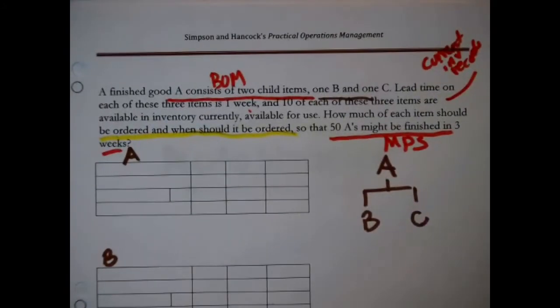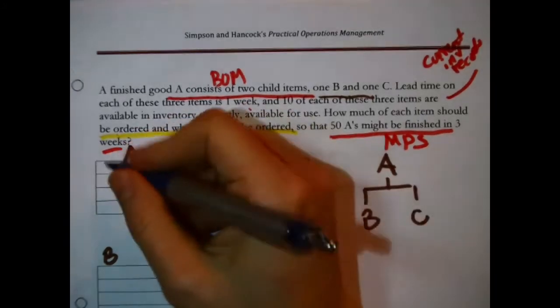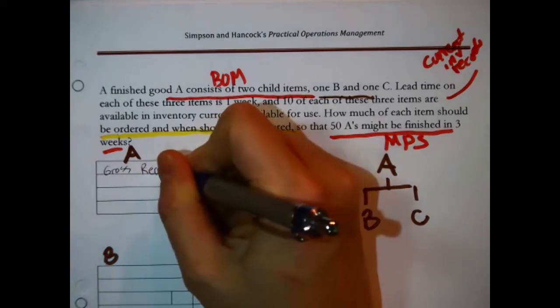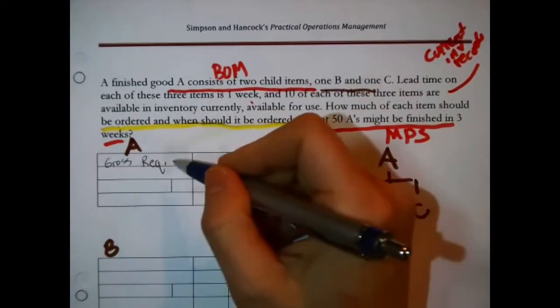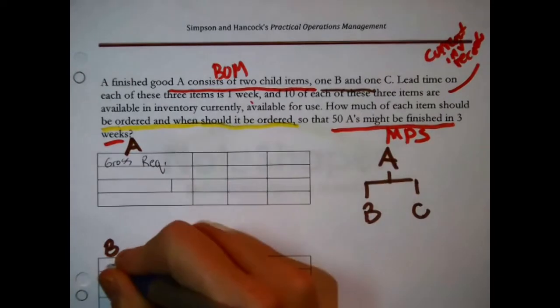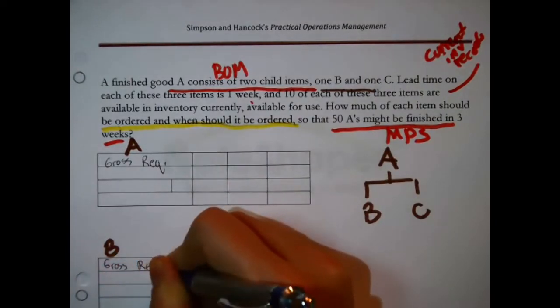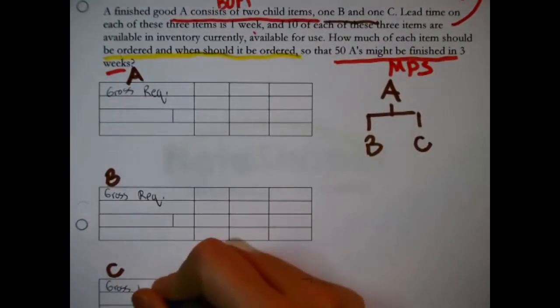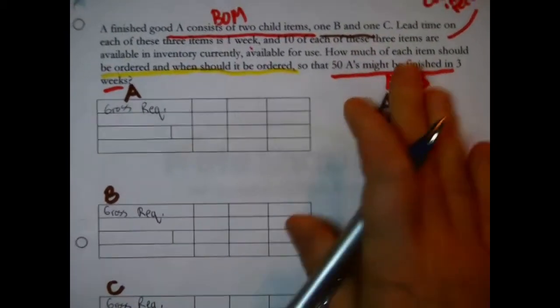Now, I should label the rows on these tables. The top row is always gross requirements. And I'm just abbreviating instead of writing out requirements. That's going to be true for each one of these records. Gross requirements for B. Gross requirements for C.